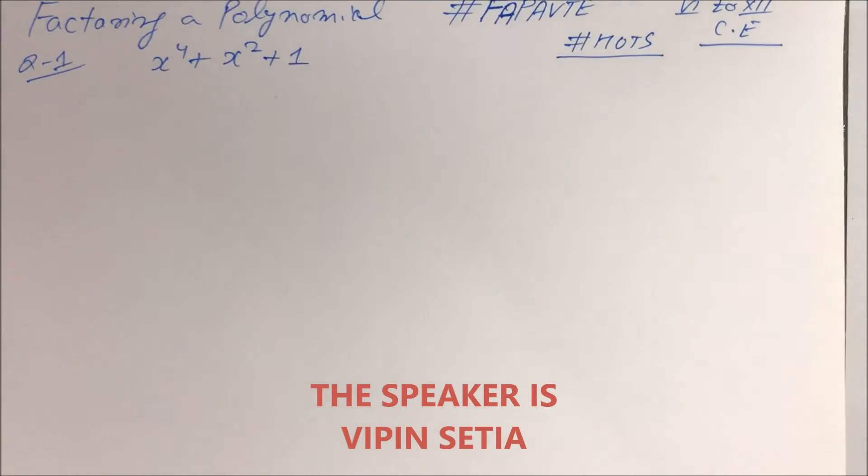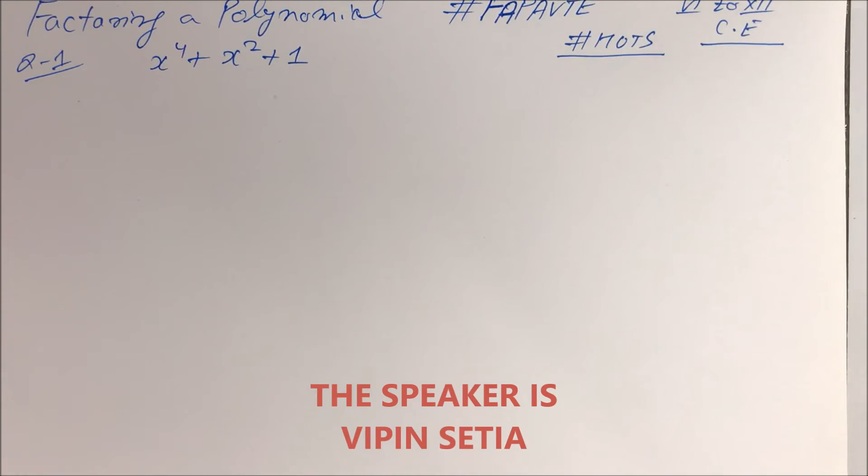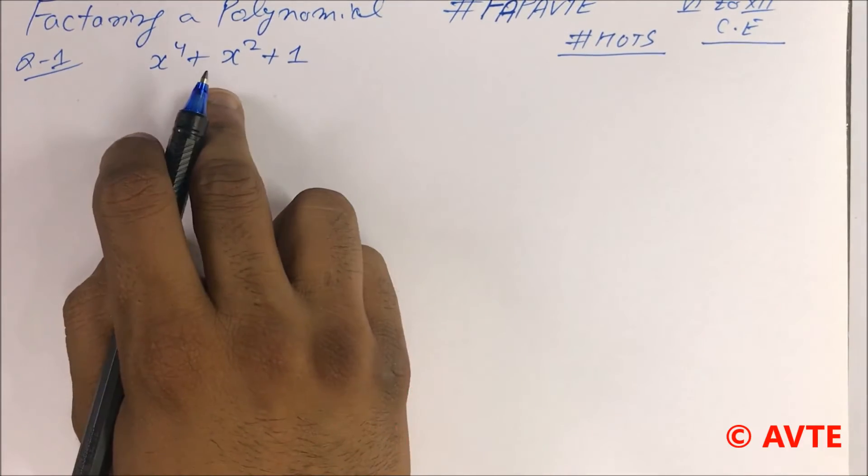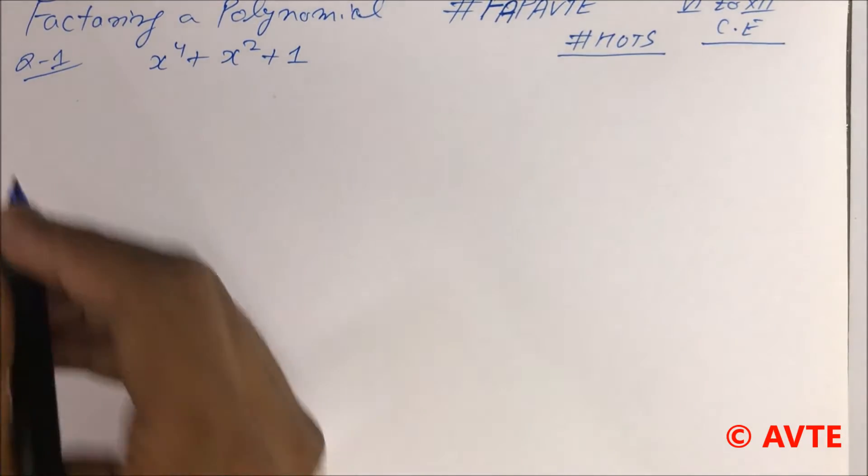So here you go with the first polynomial: x raised to the power of 4 plus x square plus 1. How to factorize?